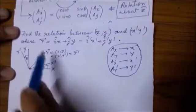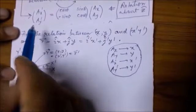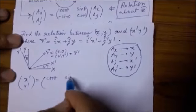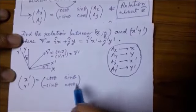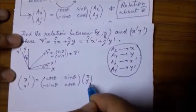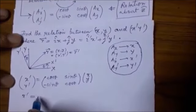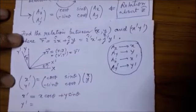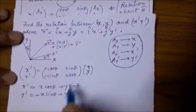Now it is time to write the transformation relations. Instead of ax-prime and ay-prime we have x-prime, y-prime. The rotation matrix is cos-theta, sin-theta / minus sin-theta, cos-theta, and it operates on x, y. Expanding this gives: x-prime equals x cos-theta plus y sin-theta, and y-prime equals minus x sin-theta plus y cos-theta.